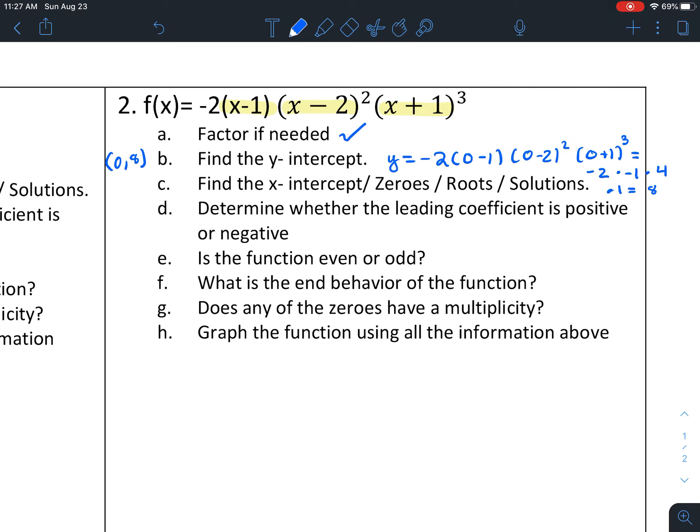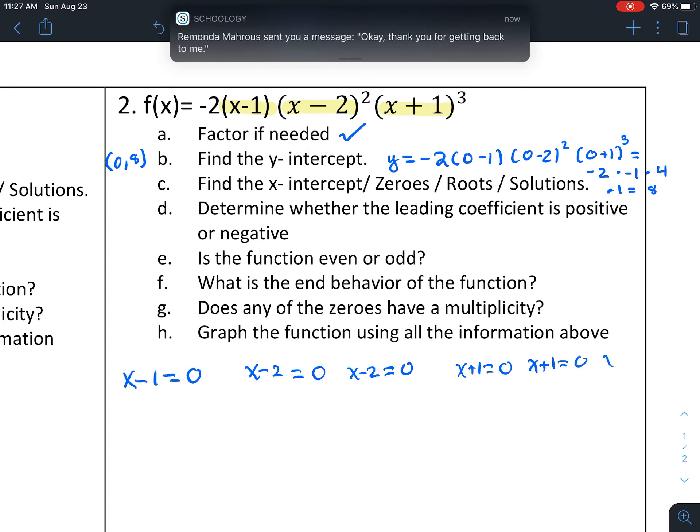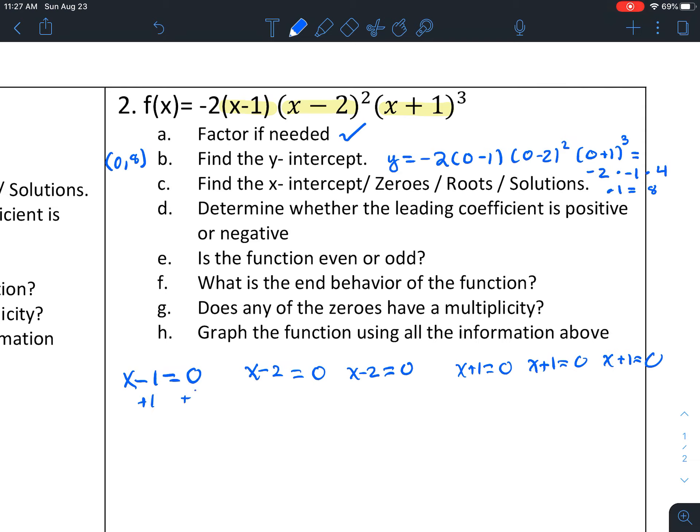So for letter C, when we find the x-intercept/zeros/roots/solutions, it's already factored. So we can just do x minus 1 equals 0. But I want you to write x minus 2 equals 0 twice to remind you that there is something interesting going on at that point. And the same thing with x plus 1 equals 0, you can write that three times.